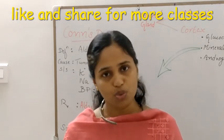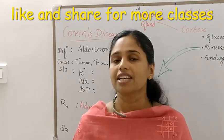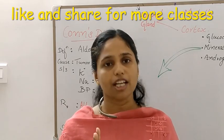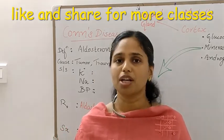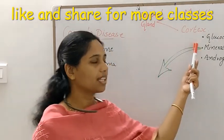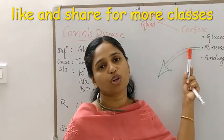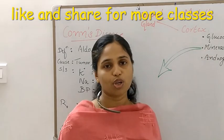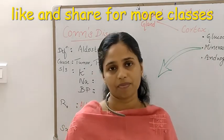There are two adrenal glands which are situated above the kidney. The adrenal gland has two coverings: the outer adrenal cortex and the inner adrenal medulla. The adrenal cortex synthesizes three hormones: glucocorticoid, mineralocorticoid, and androgen. The mineralocorticoid synthesizes a hormone called aldosterone.